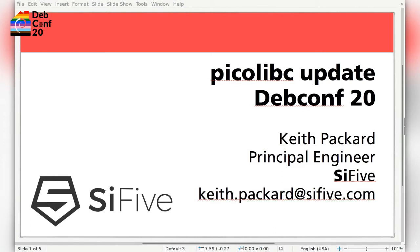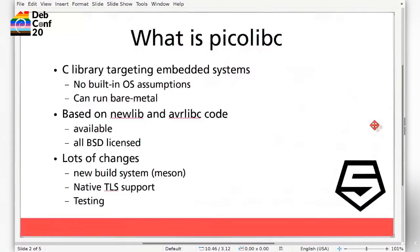I forked newlib and created picolibc, and that's been going on for a little more than a year. Picolibc is a C library explicitly designed for embedded systems — it doesn't have any operating system assumptions. It's based on newlib and avr-libc code. It's all BSD licensed, which is very popular in the embedded space. I cleaned out all of the non-BSD licensed code in newlib so that the provenance of all the code in picolibc is really clear, and that's made a bunch of people happy. I've replaced the build system with Meson.